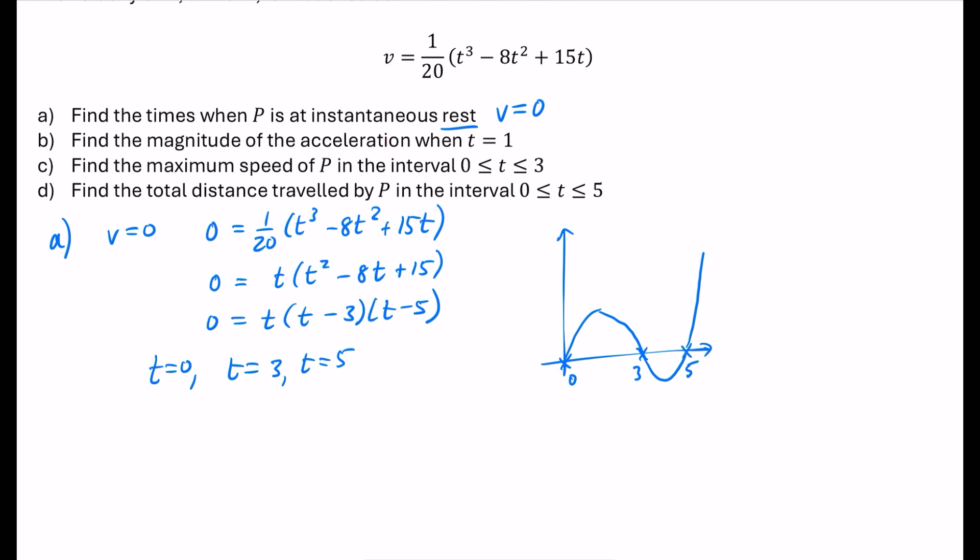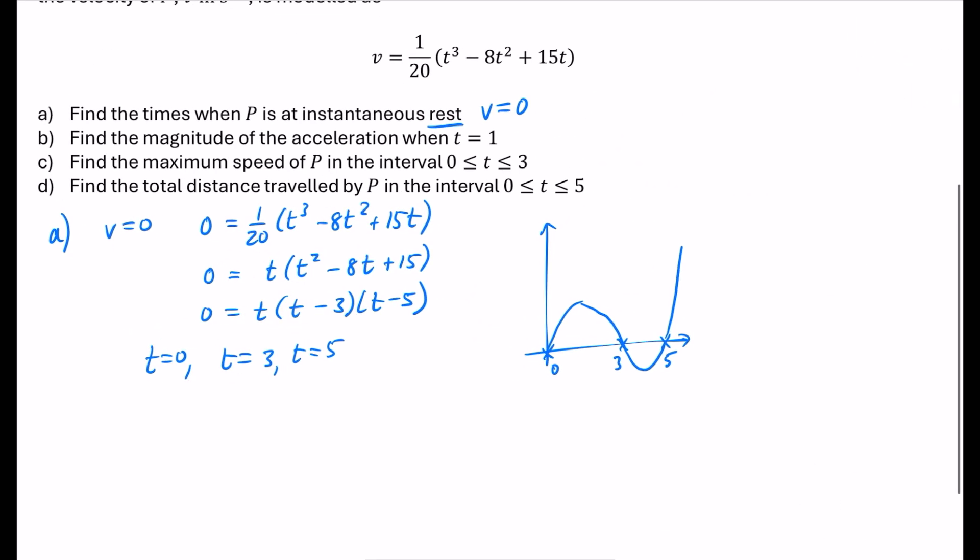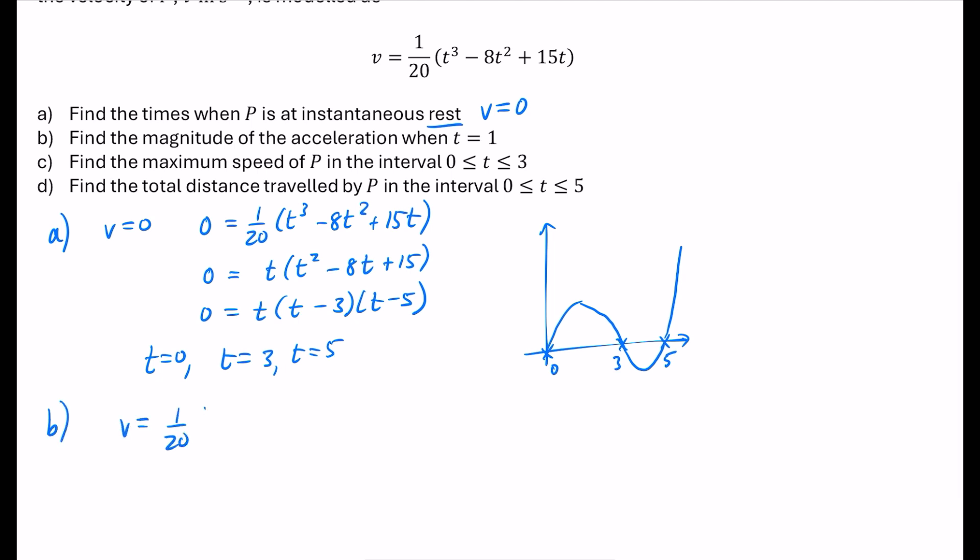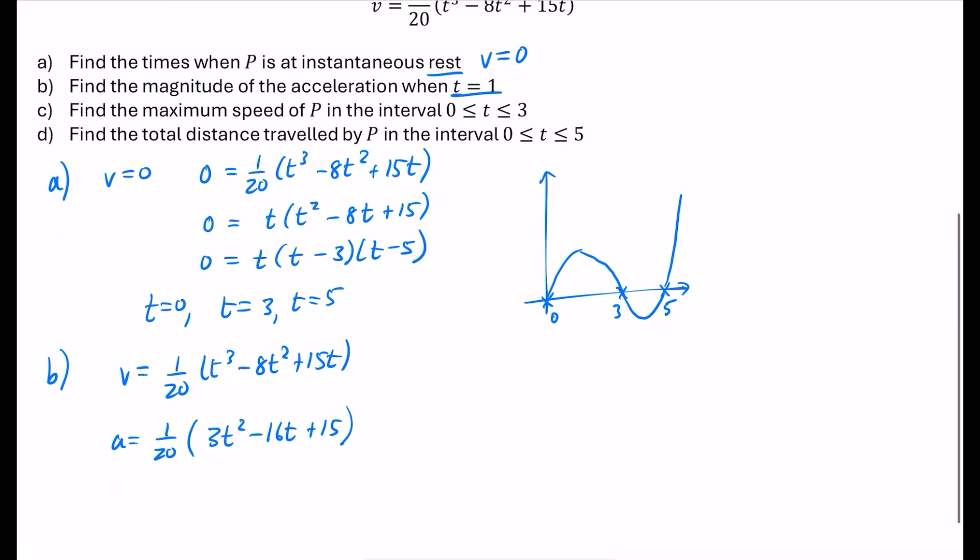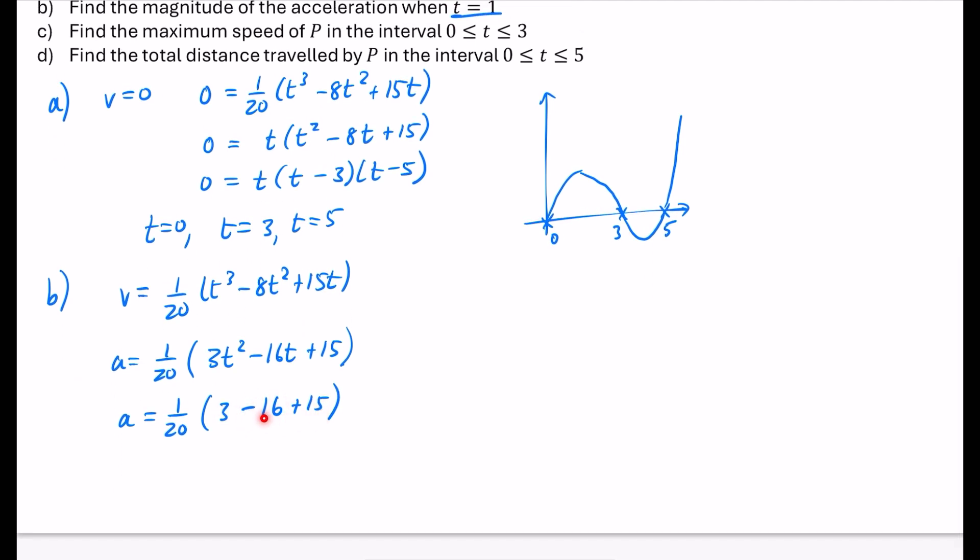Find the magnitude of the acceleration when t = 1. This means we're going to find what the acceleration is, so we differentiate. Let's take that expression for v, which is 1/20(t³ - 8t² + 15t), and differentiate it. I can leave that 1/20 there and differentiate everything in the bracket, so I get 3t² - 16t + 15. We're going to substitute in t = 1. So it's 1/20(3 - 16 + 15). That's 18 minus 16, which is 2. 2/20 = 1/10 = 0.1 meters per second squared.